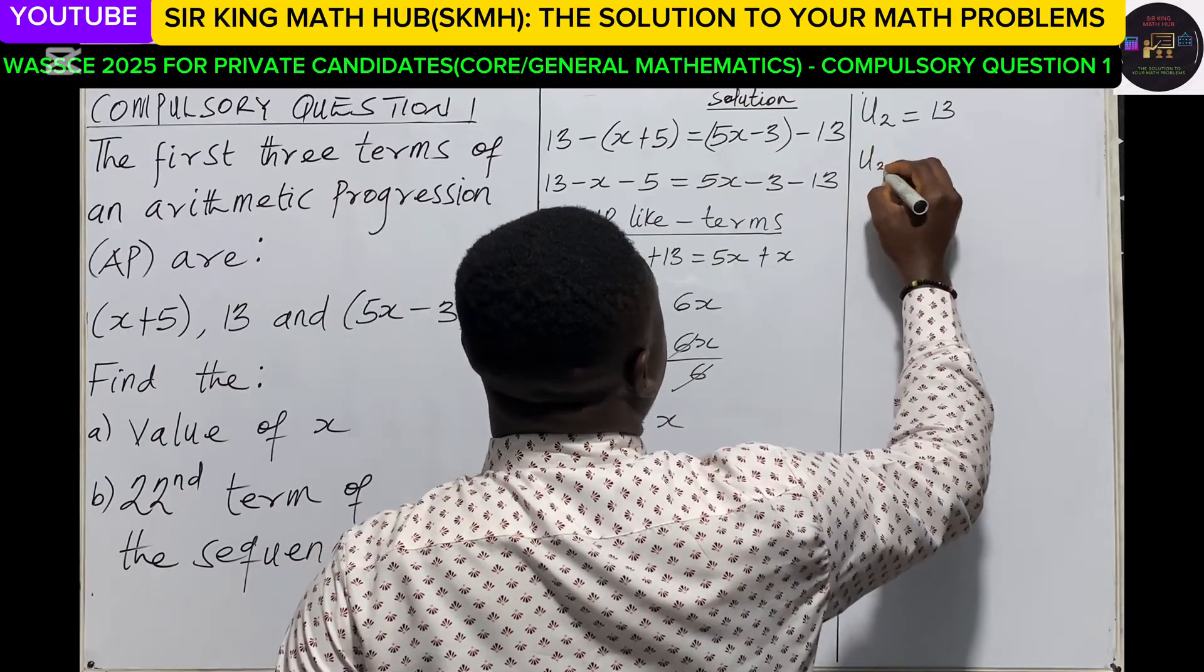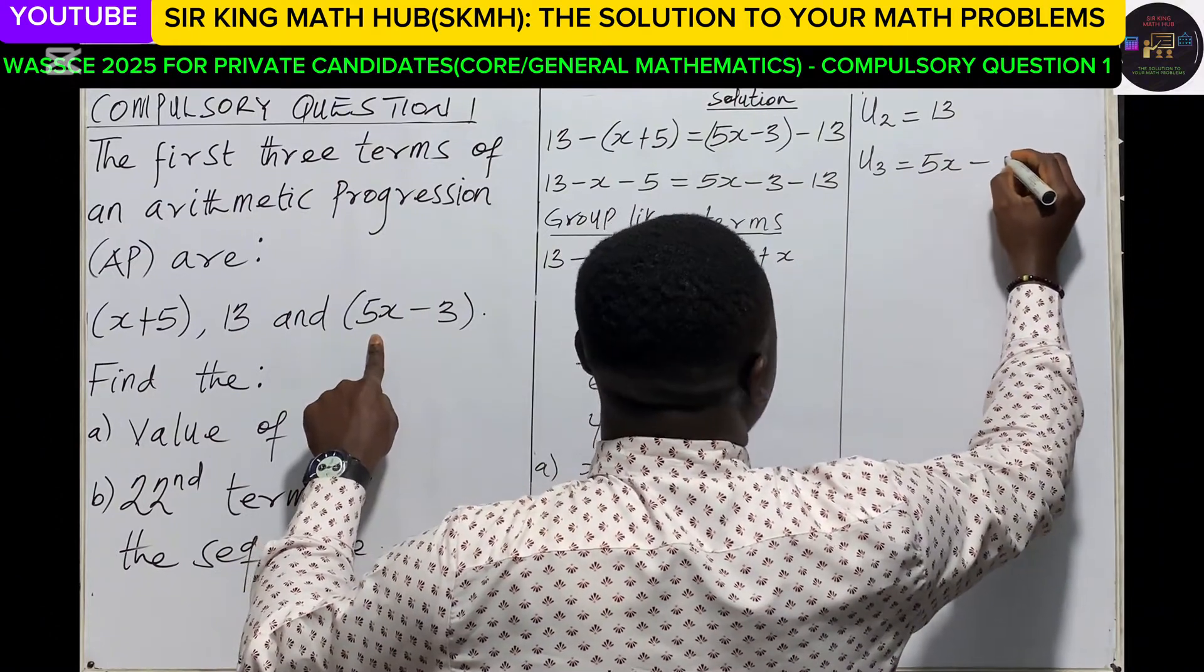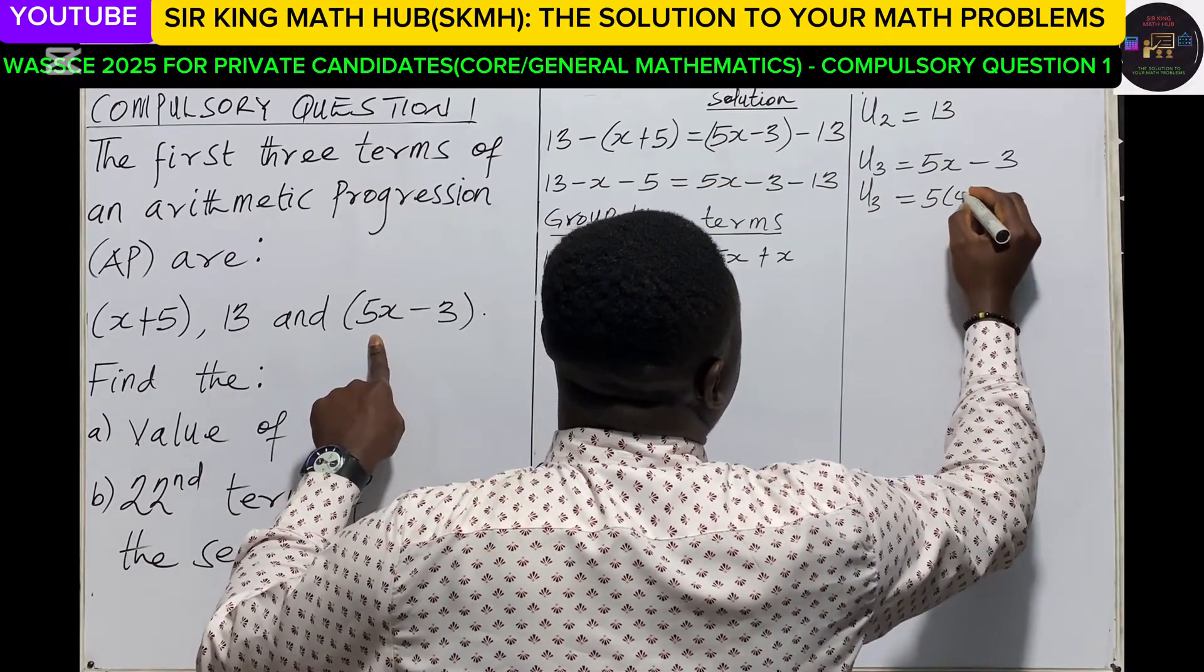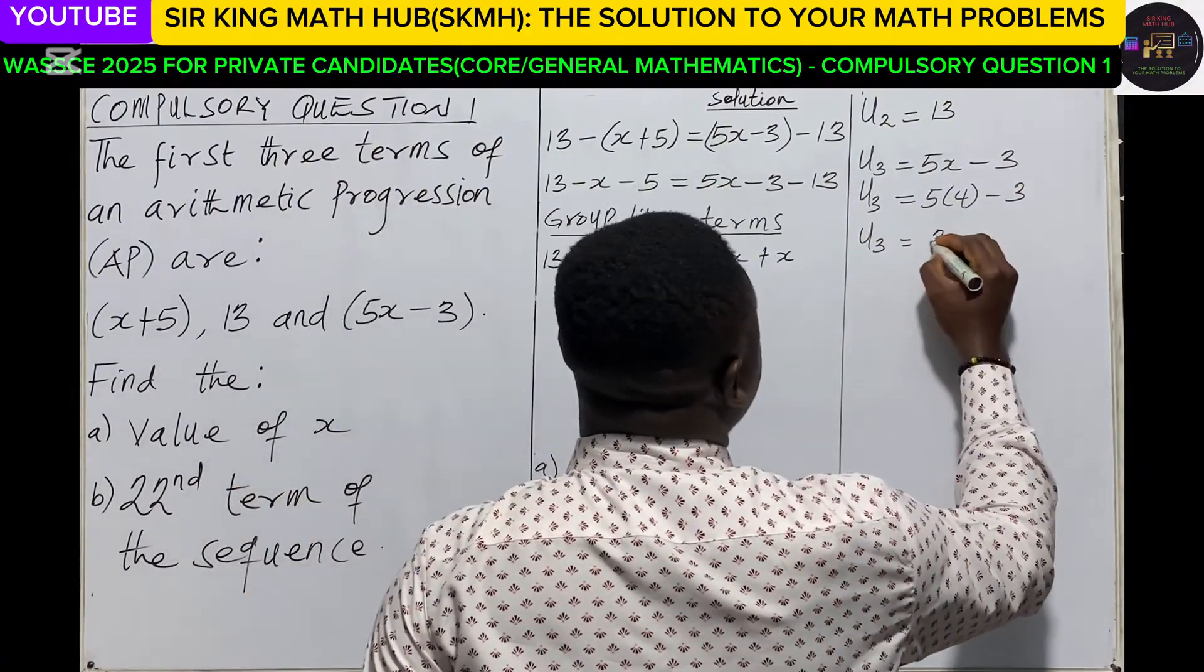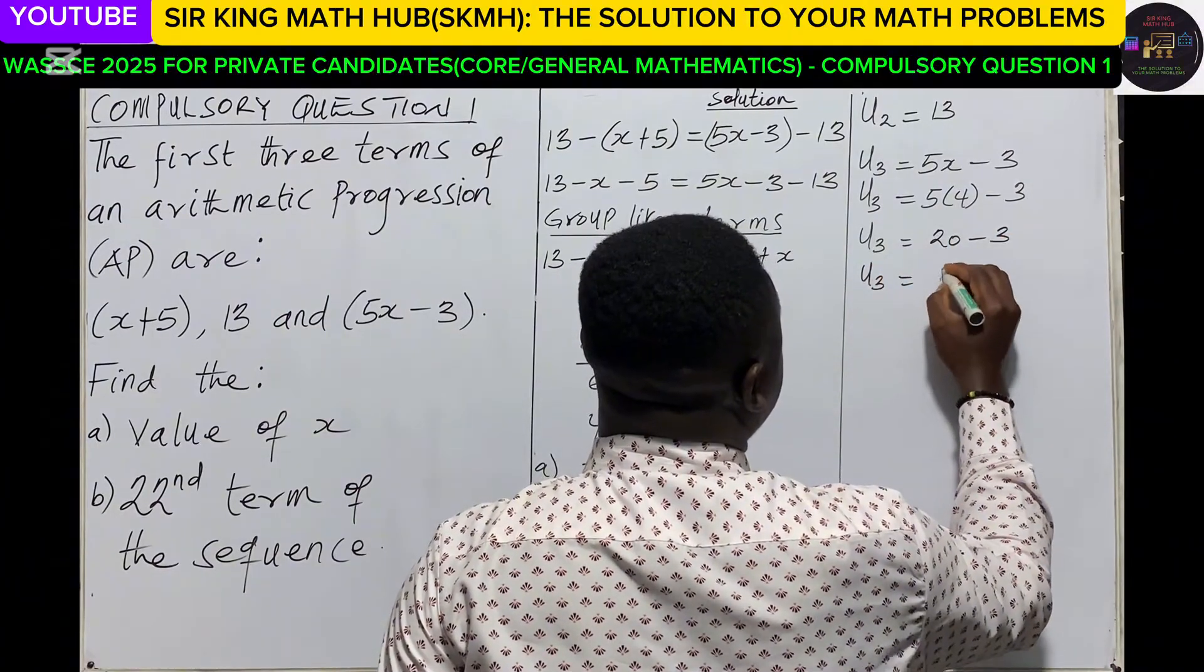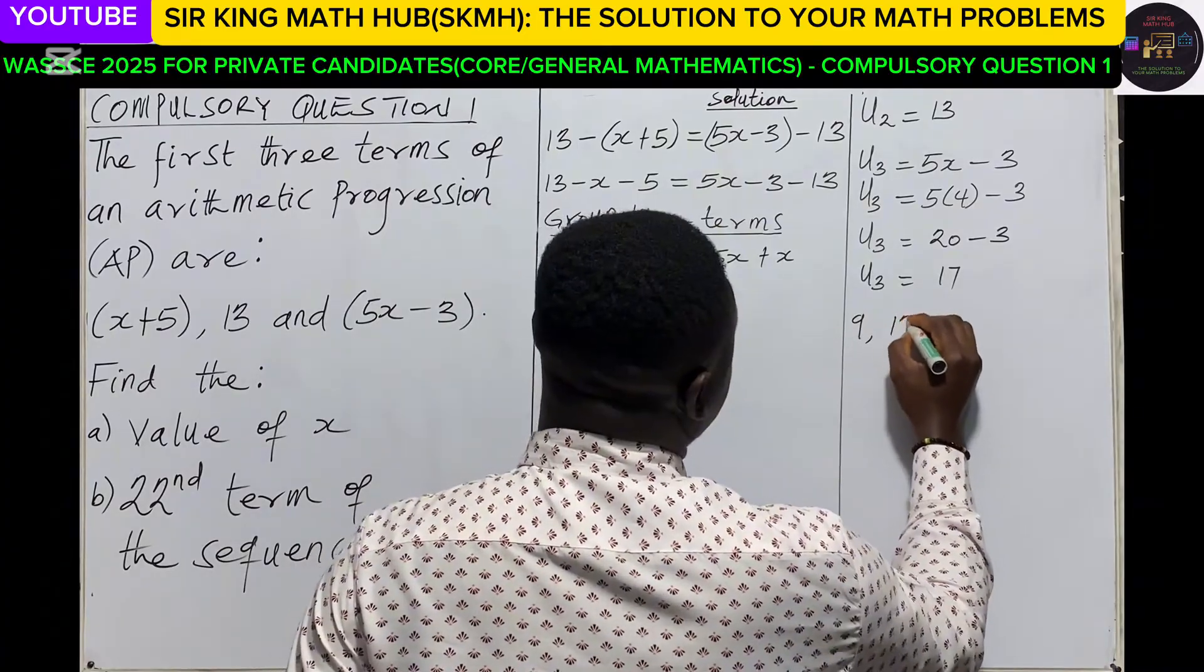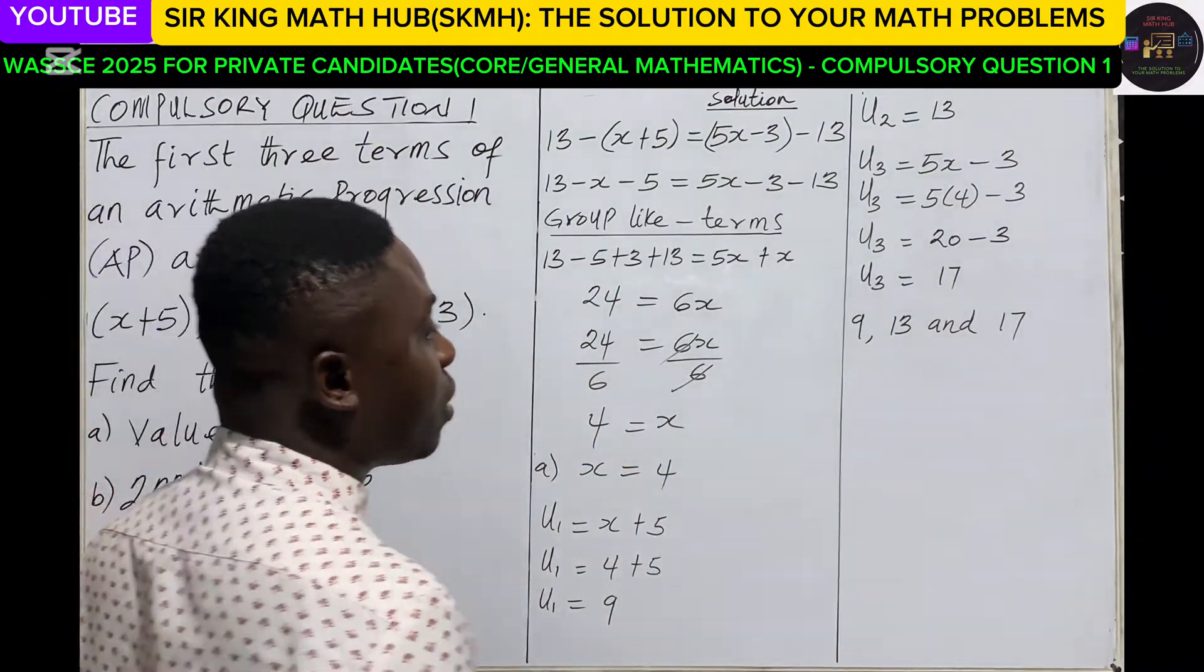Now the third term. The third term was 5x-3, but we had x as 4, so 5 times 4 minus 3. 5 times 4, that is 20 minus 3, so the third term is 17. So let's list the terms: the first term we had 9, second term is 13, and the third term is 17.